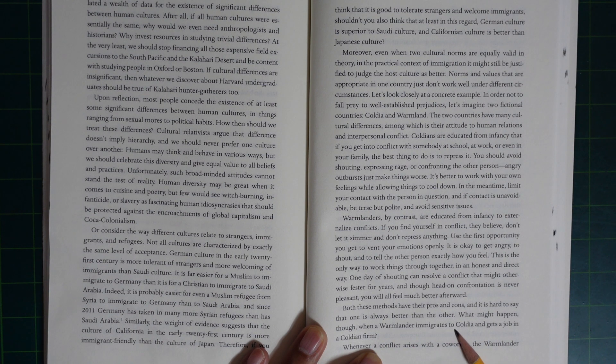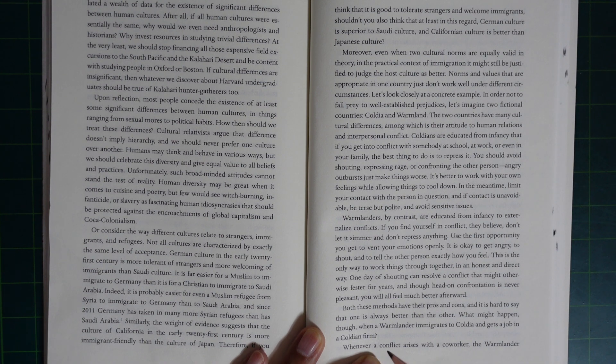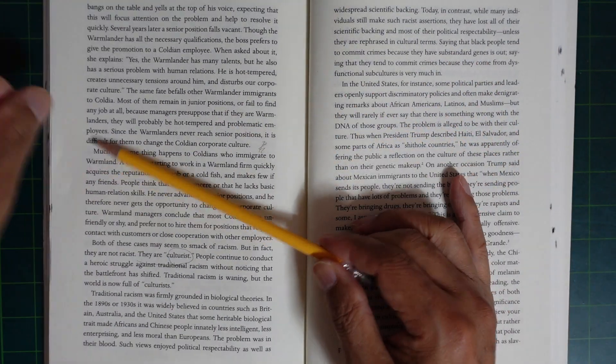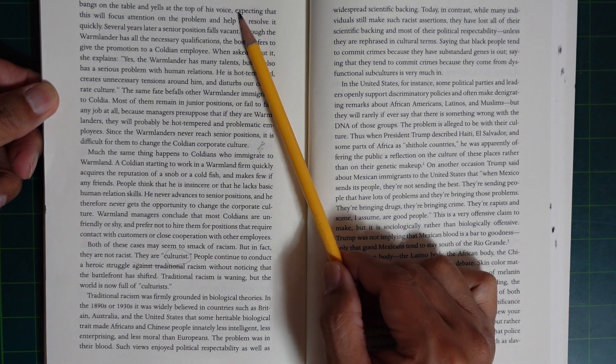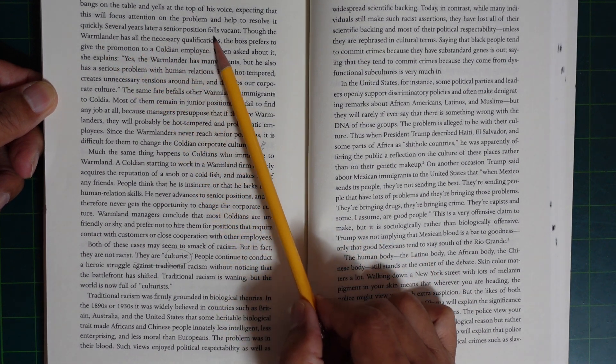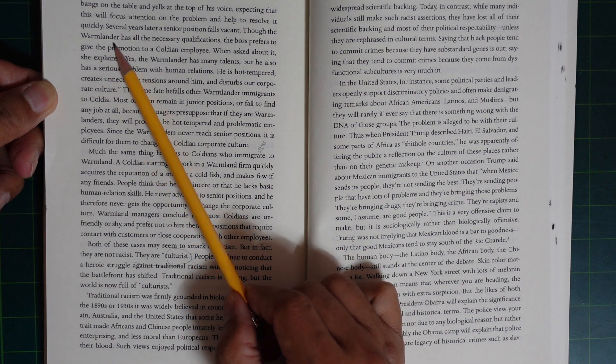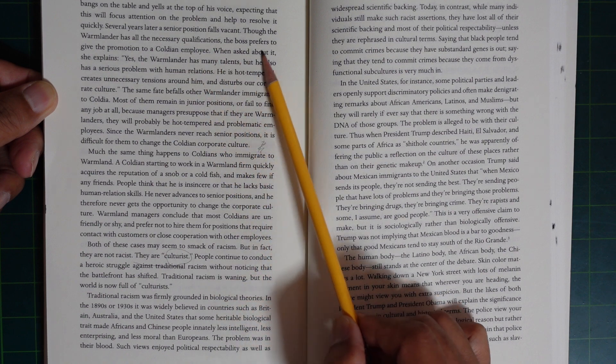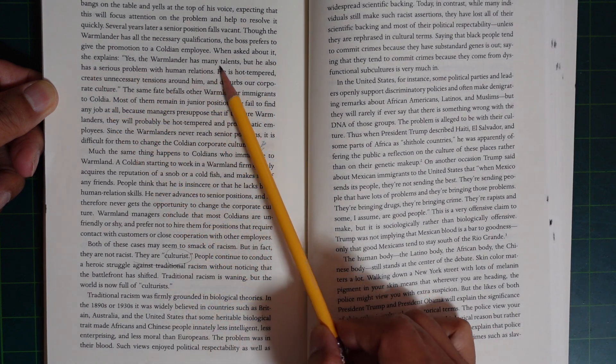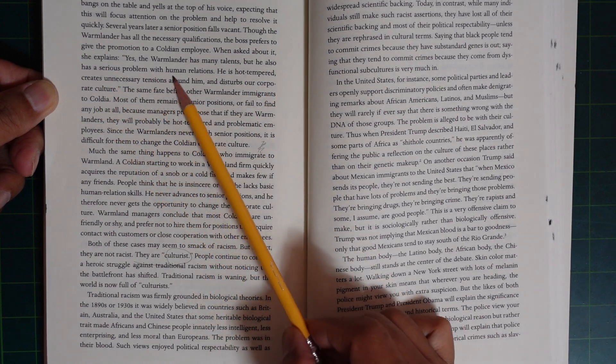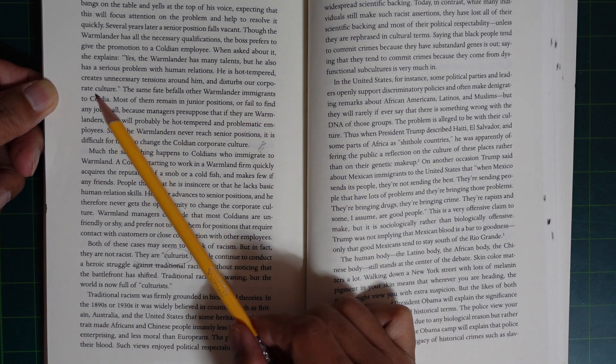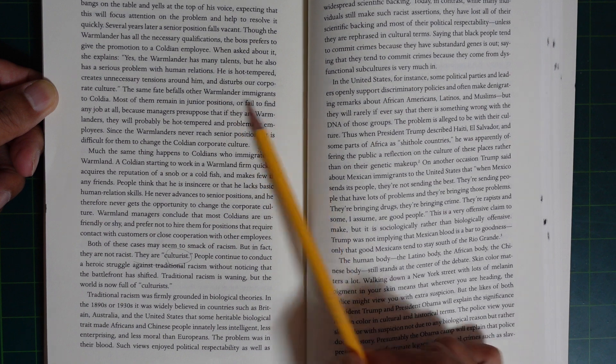One might happen though when a Warmlander immigrates to Coldea and gets a job in a Coldean firm. Whenever a conflict arises with a co-worker, the Warmlander bangs on the table and yells at the top of their voice, expecting that this will focus attention on the problem and help to resolve it quickly. Several years later, a senior position falls vacant. Though the Warmlander has all the necessary qualifications, the boss prefers to give the promotion to a Coldean employee. When asked about it, she explains: 'Yes, the Warmlander has many talents, but he also has a serious problem with human relations. He's hot-tempered, creates unnecessary tension around him, and disturbs our corporate culture.' The same fate befalls other Warmlanders in Coldea.